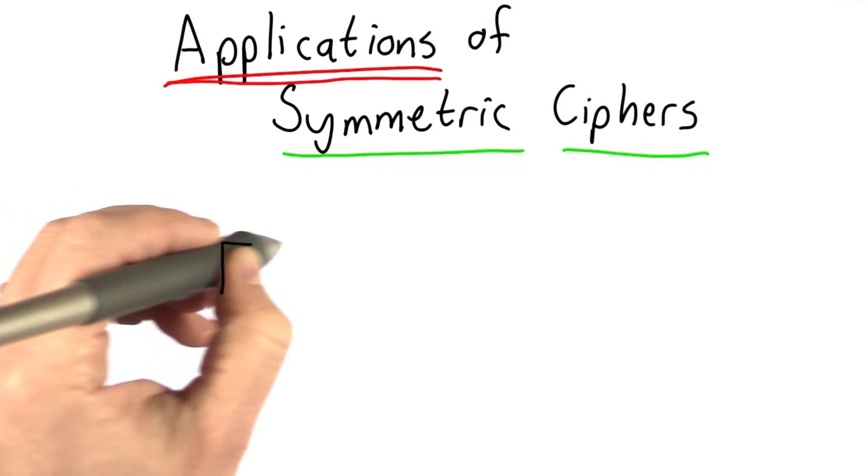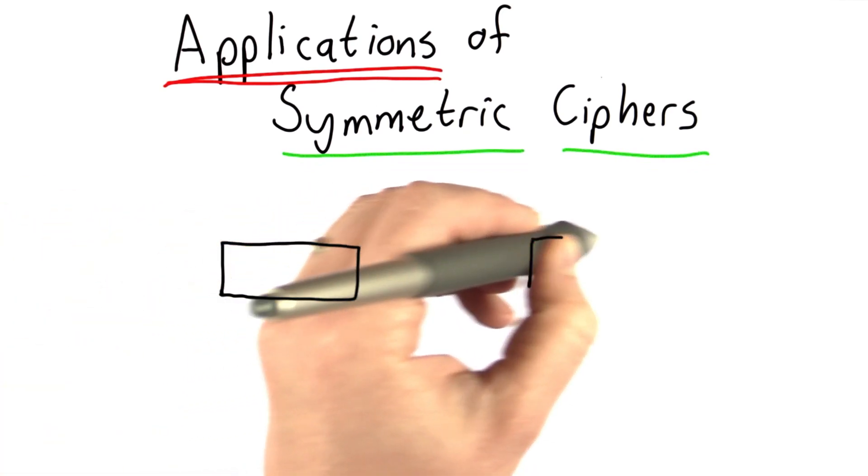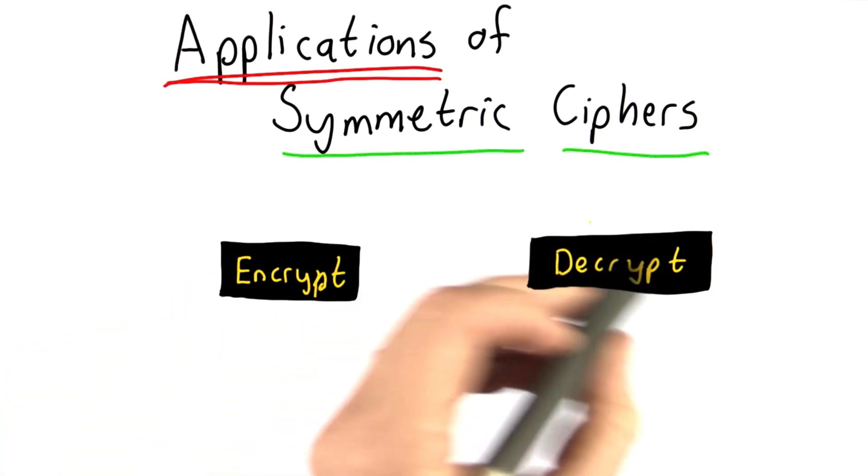For the rest of this course, we're mostly going to view ciphers as black boxes. They provide two functions, encrypt and decrypt.